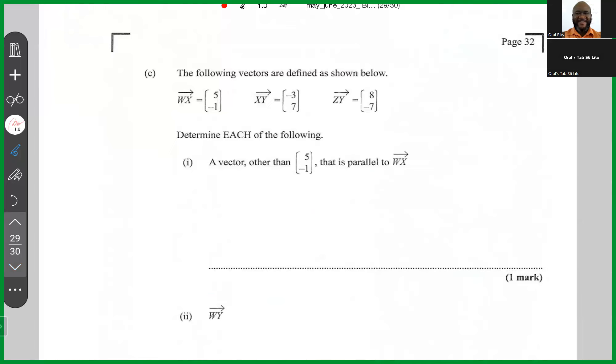Part C says the following vectors are defined as shown below. WX is 5, minus 1. XY is minus 3, 7. ZY is 8, minus 7. Determine each of the following: a vector other than 5, minus 1 that is parallel to WX.